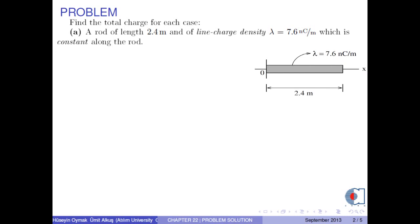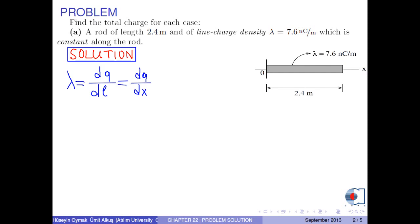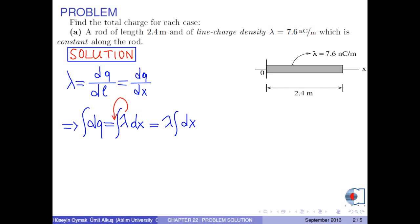The line charge density lambda is found by the formula dq over dl. Here, dl is dx. Therefore, dq is lambda times dx. If we take the integral of both sides, since lambda is constant, we take it outside the integral to get lambda times the integral of dx. The integral of dq is the total charge, and the integral of dx is the total length L. Therefore, q becomes lambda times L.